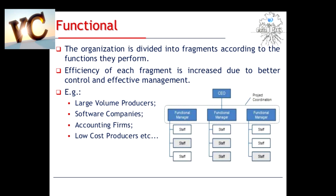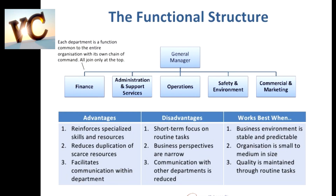Production department ka dhyan: quality, repair aur maintenance, machines. Marketing kya dhyan rakhega: advertising, sales, customer needs, customer service, research, customer wants, customer satisfaction. Finance department kya dhyan rakhega: capital structure, finance planning. Purchase department kya dhyan rakhega: purchase of raw materials, purchase of inputs, uska record — kitna input ho raha hai, kitna output — kab new purchase karna hai, kab stock khatam ho raha hai.